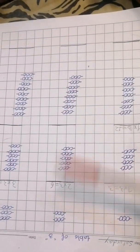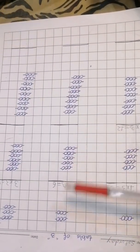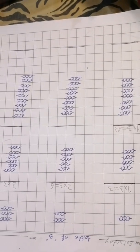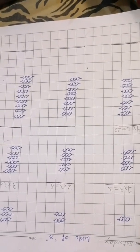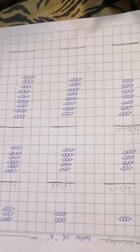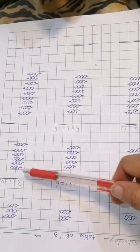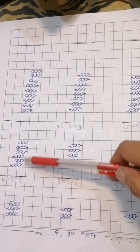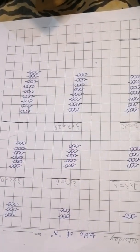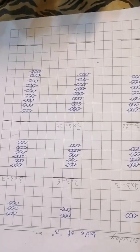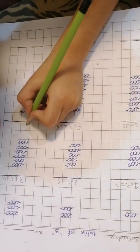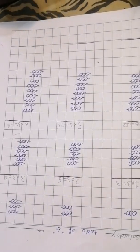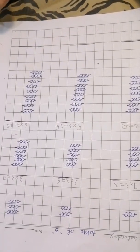How many threes are here? Five. Five threes. Five threes are fifteen. Fifteen. How many threes are here? Six. Six threes. Six threes are eighteen. Eighteen. Good job.